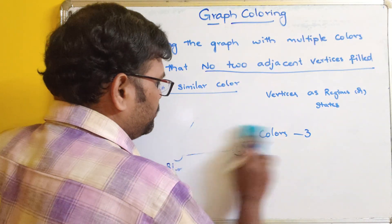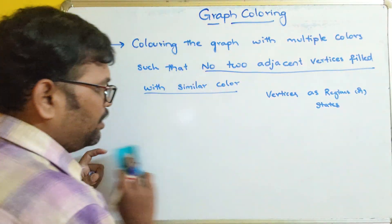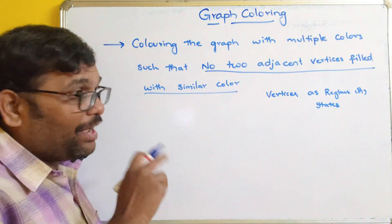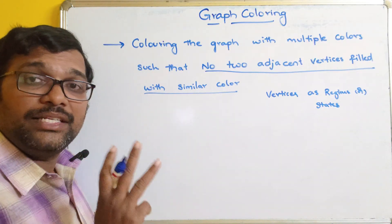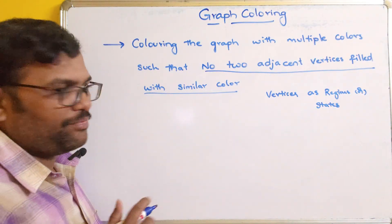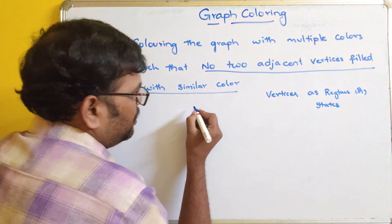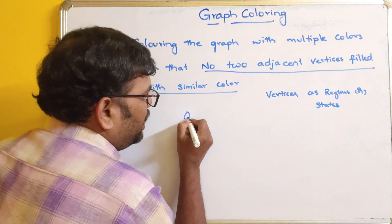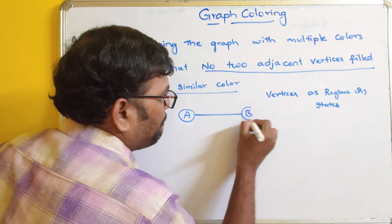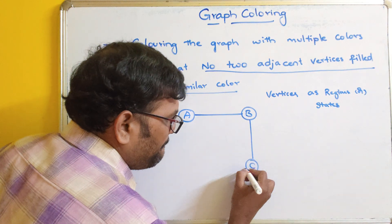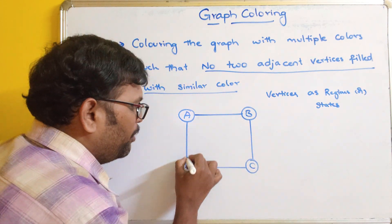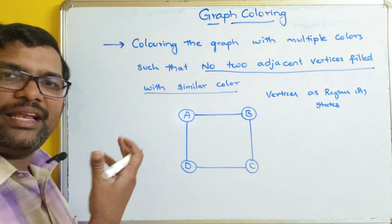Let us move on to another example. If you are filling a graph with three colors, that is called a three-coloring graph. Let us take one more graph.